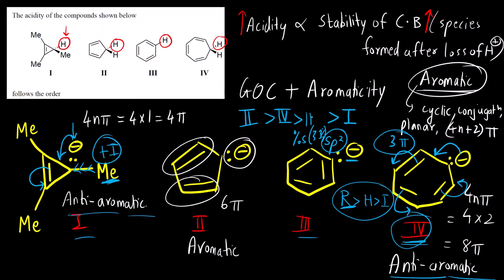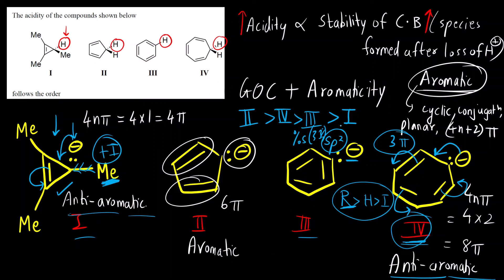So the order is: compound 2 most stable, then 4, then 3, and compound 1 is least stable. For compound 1, there are various factors: it is anti-aromatic, there is a methyl group donating electron density via the +I inductive effect, and importantly the 3-membered ring is highly unstable because of angle strain — also called Baeyer strain. Whereas the 8-membered ring in compound 4 is comparatively stable. So this is the correct order of stability and acidity.